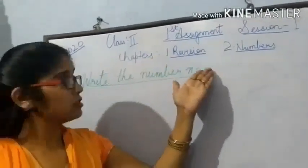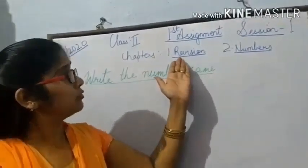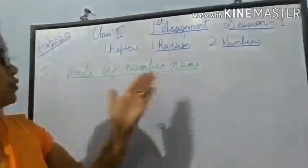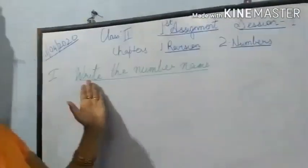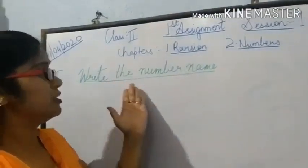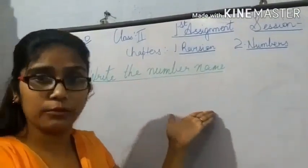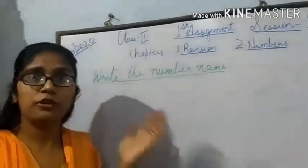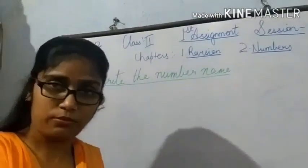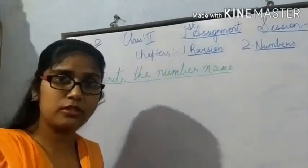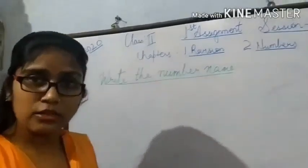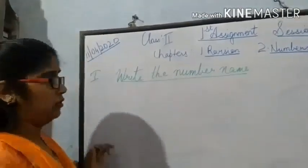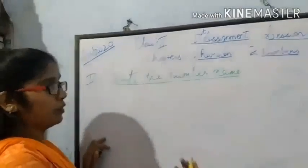The chapters are: revision as the first chapter, and second is numbers. Our first question is to write the number names. Number names are something you have been learning from early classes, and in this class we will learn more about it.